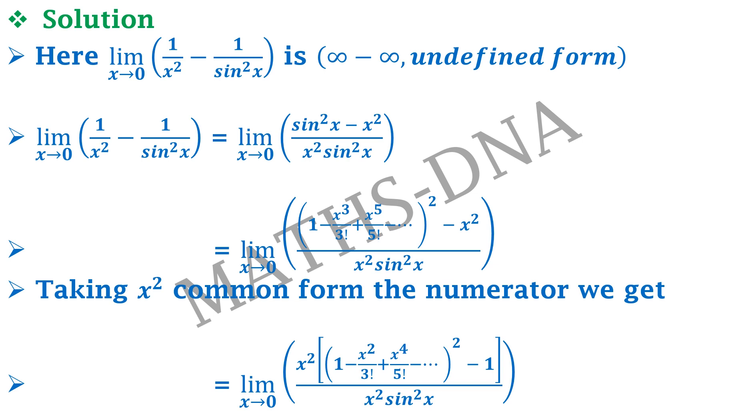Now we might be thinking, why we took x square as common? Because it is available in the denominator so we can cancel that out. Watch carefully that when you are taking x square common from the numerator from the series of sin, you only take x as common because it is already whole squared, so when we take x and it comes out it becomes x square.